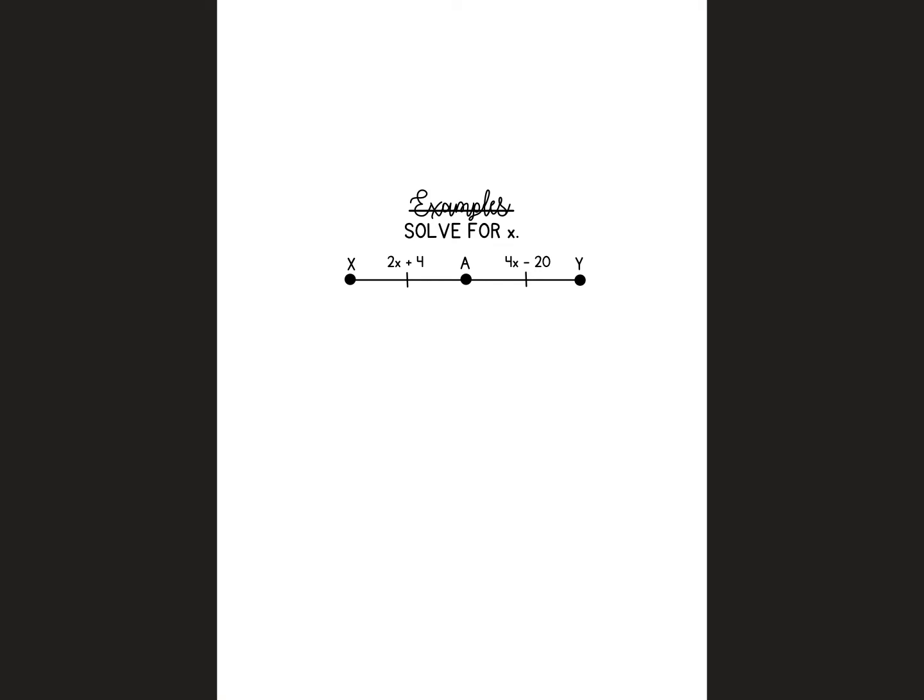For this next one, it says solve for x. I noticed right away that I have these two marks, which means that the two pieces are congruent or the exact same. So I want to go ahead and take those two equations and set them equal to each other. And then I'm going to start solving. Personally, I like to move my x's first. This is a positive 2x, so I would start by subtracting 2x from both sides.